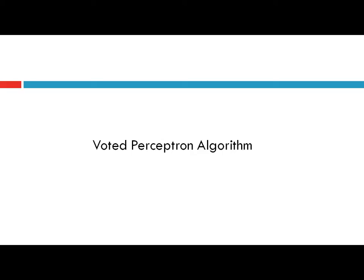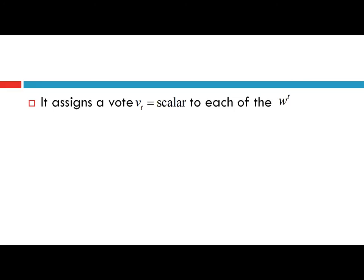The difference between a simple perceptron and a voted perceptron is, as apparent from the name, it assigns a vote to each of the weight vectors encountered during the learning process. It assigns a vote vt — which is a scalar — to each weight vector wt, which is a vector in R^(n+1). The final weight vector is given as the voted or weighted sum of all the weight vectors that were encountered during the learning process of the perceptron learning algorithm.